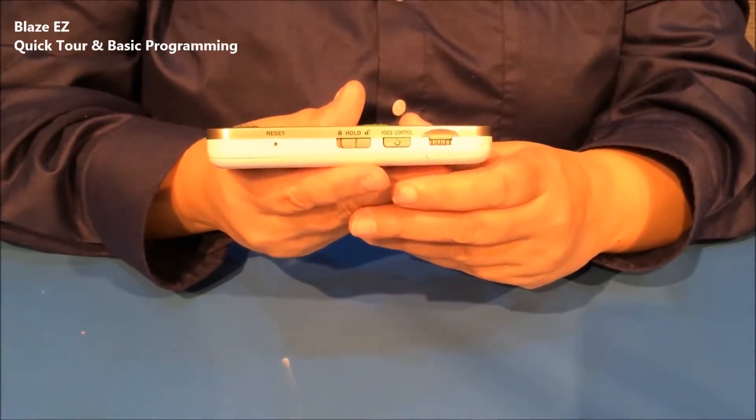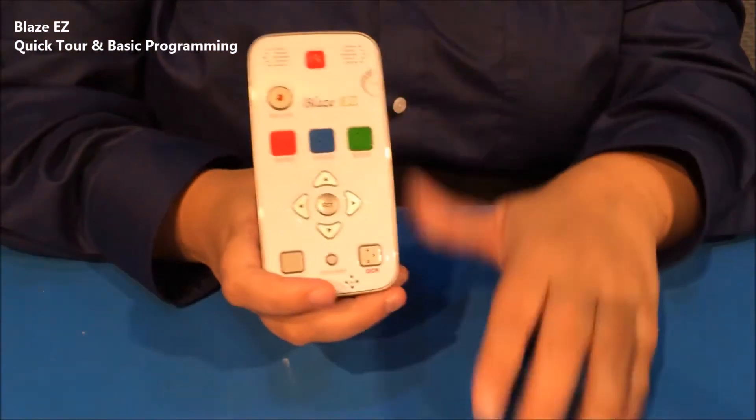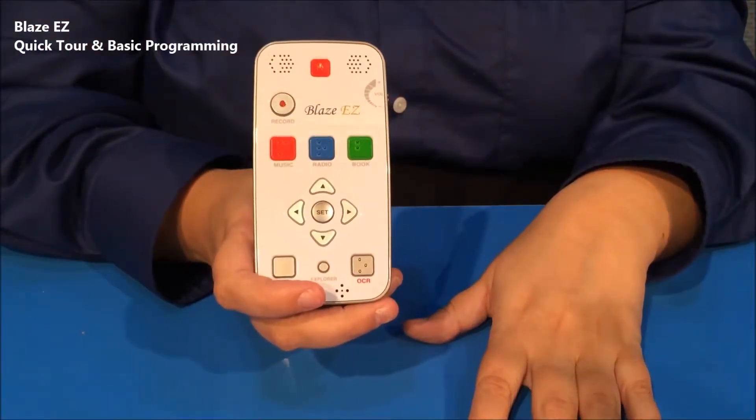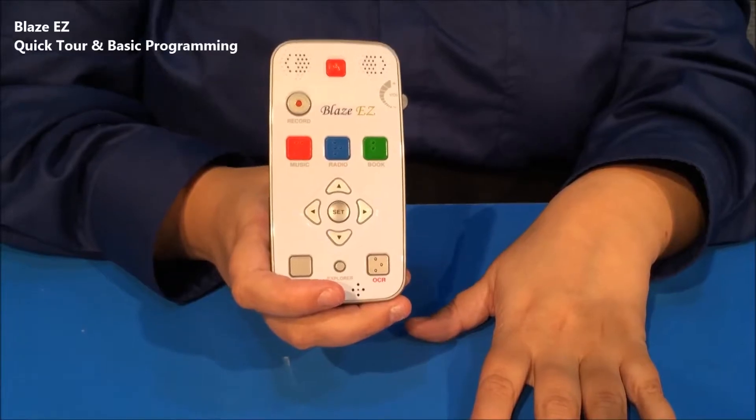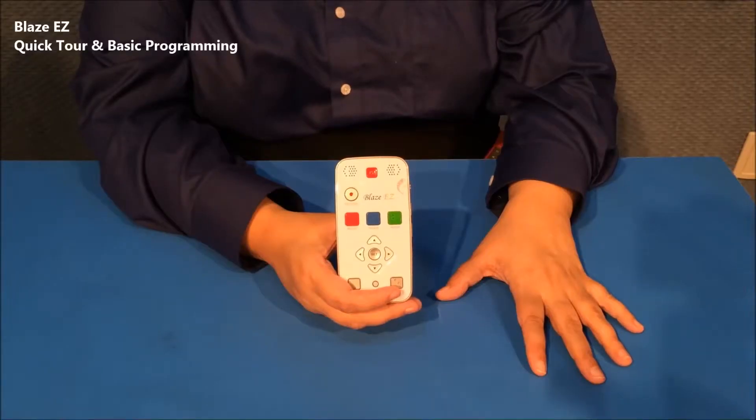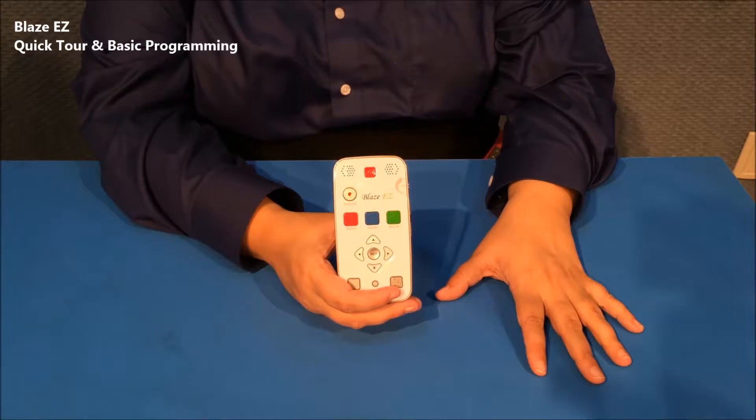So that is a basic orientation to the unit. These are all of the buttons and ports that you need to know to operate everything. So now let's take a look at how it works. When you first turn on the BlazeEasy, you are placed in the home menu. And the home menu contains several items including web radio, podcasts, library services, also utilities and options, and several other settings.